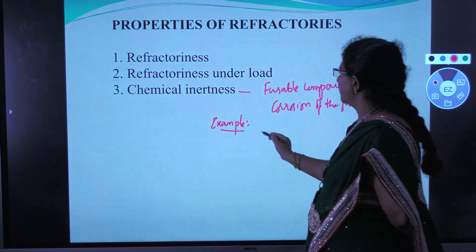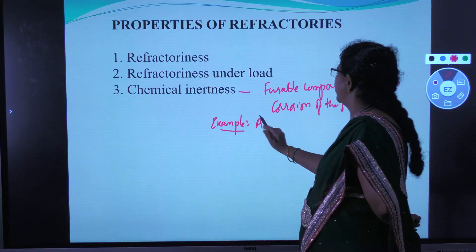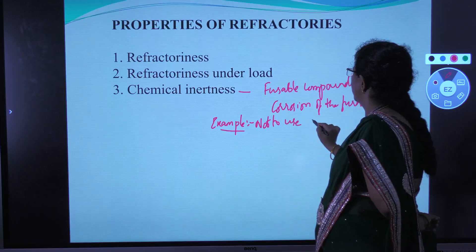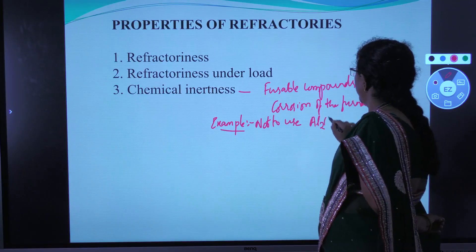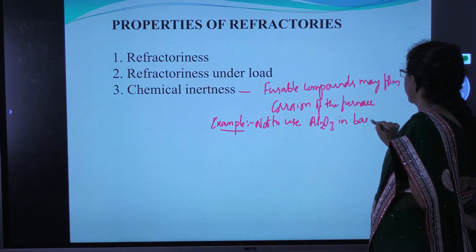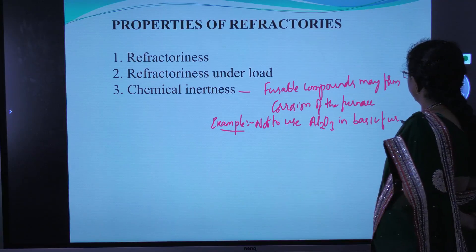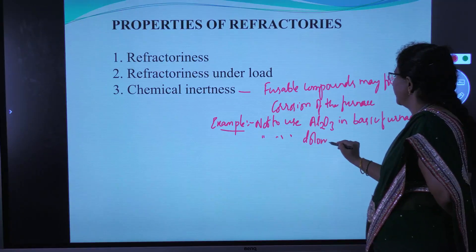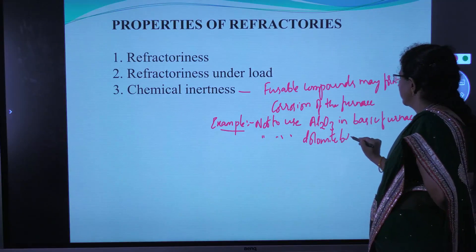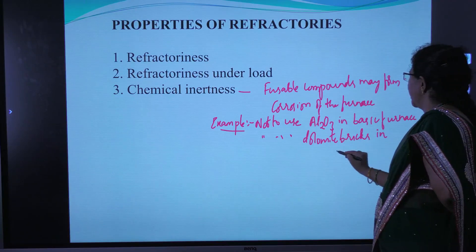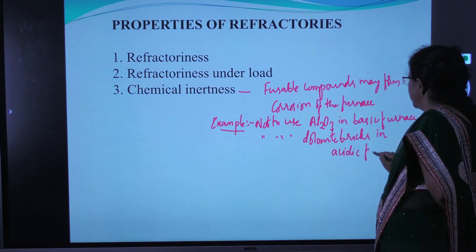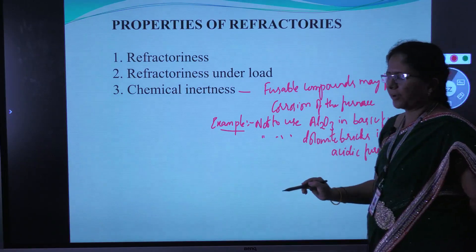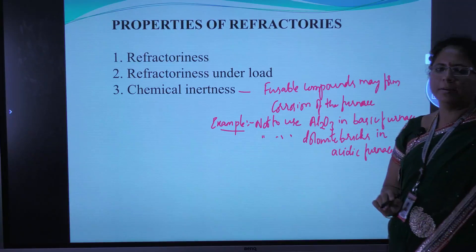It is better not to use Al₂O₃ in a basic furnace, and not to use dolomite bricks in an acidic furnace. This is because Al₂O₃ is an acidic refractory, while dolomite bricks are basic refractories.